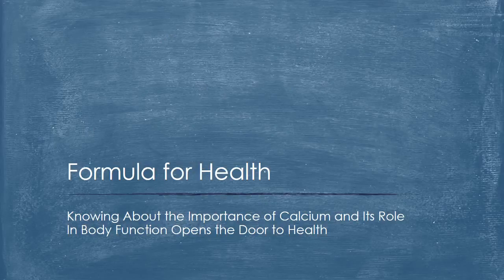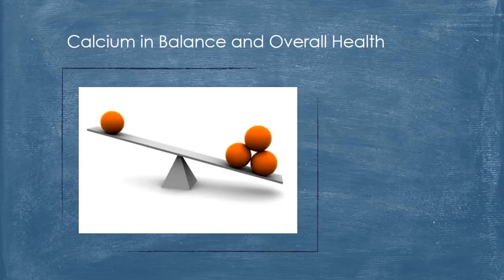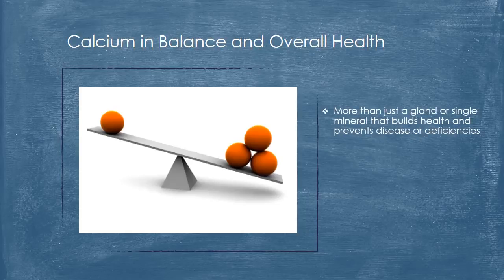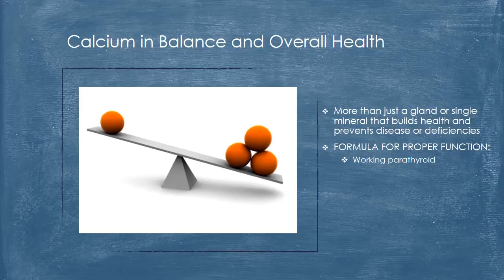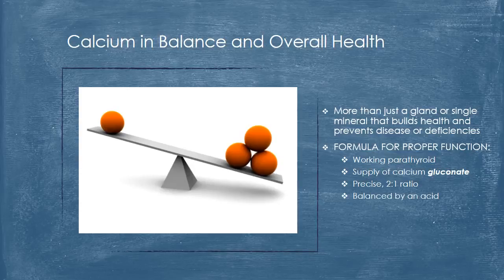So how about an overall formula for health? Knowing about the importance of calcium and its role in body function opens the door. The key is calcium balance and how it relates to overall health. A properly working parathyroid coupled with a proper supply of the correct form of calcium in a precise 2-to-1 ratio to its partner mineral magnesium, all balanced by an acid, is the formula for proper function. All elements present can make for the optimum body and condition.